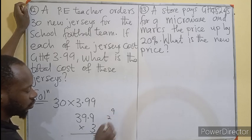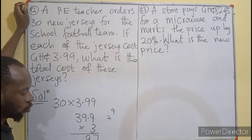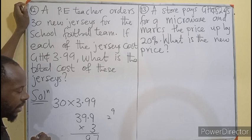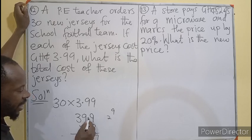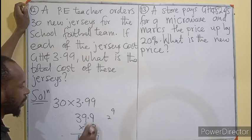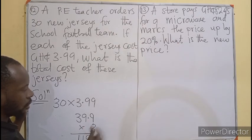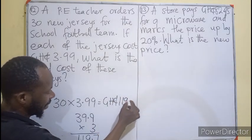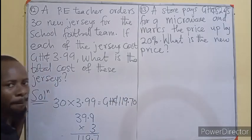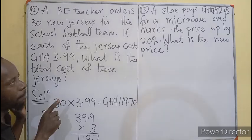3 times this, 27, so 29, remainder of 2. 3 times this will give us 9, 9 plus 2 will be 11. Decimal point is here, so we indicate. This simply means that the cost of the jerseys is 119 Ghana cedis, 70 pesewas for all of them.